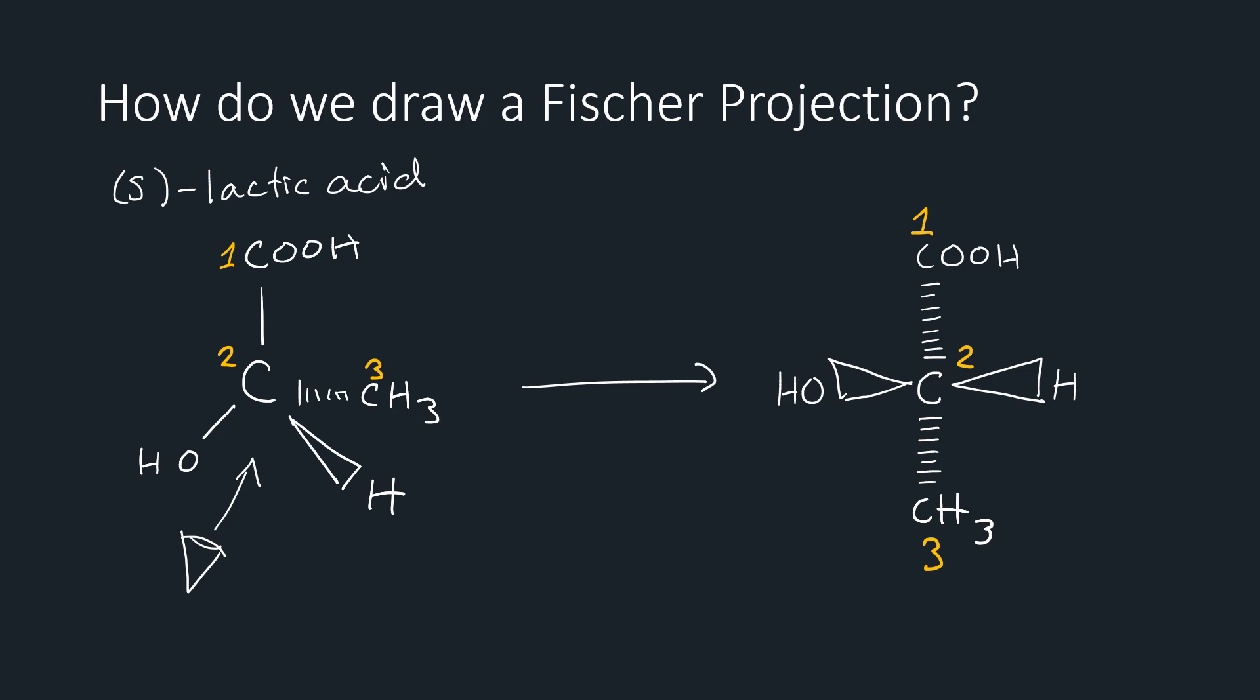Make sure carbon 1 is at the top of our new projection. As you can tell, our carbon chain is vertical and pointing away from us, as denoted by dashed lines, and our horizontal bonds are pointing towards us, denoted by wedged bonds. Notice how the wedged horizontal bonds that point towards us sort of look like a bow tie. This should illustrate why this projection is sometimes called a bow tie convention.